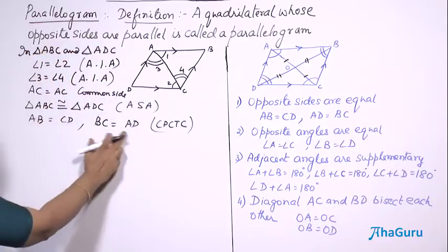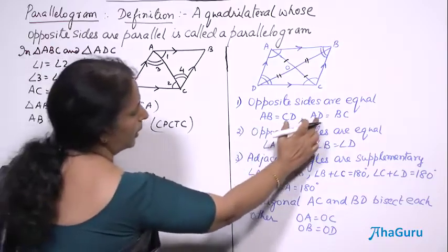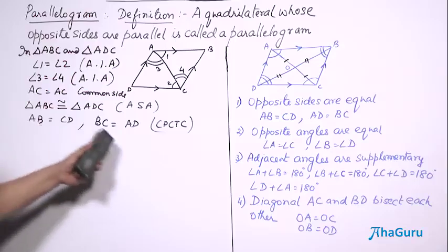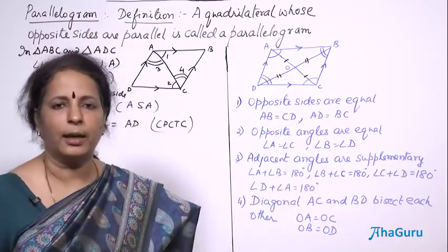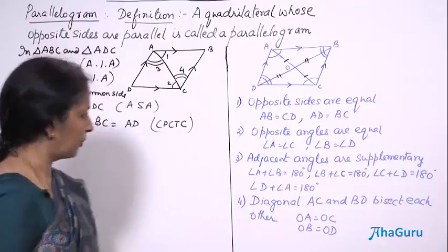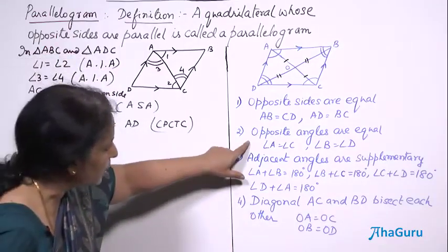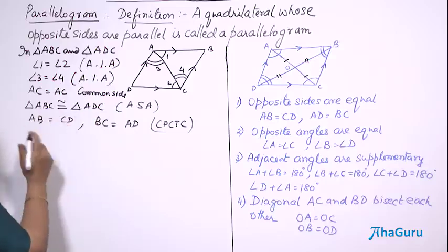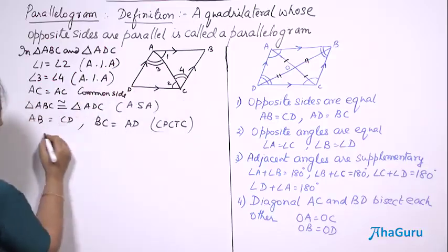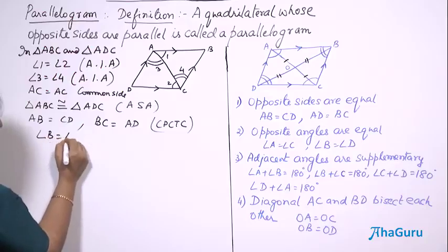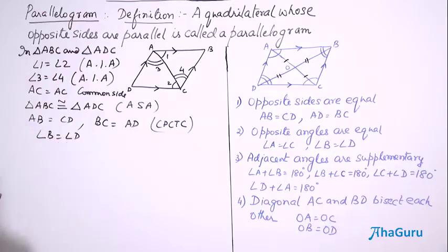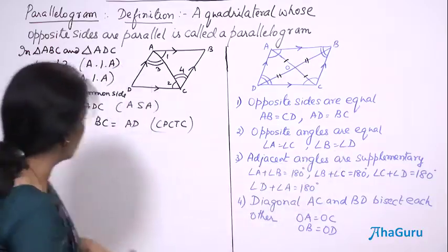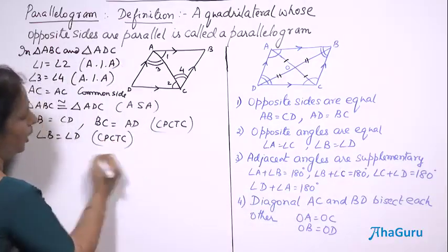So AB from the upper triangle equals CD from the lower triangle, and BC from the upper triangle equals AD from the lower triangle — these two are equal by CPCTC. I have proved AB is equal to CD and BC is equal to AD. So the first property — opposite sides are equal in a parallelogram — is now proved. Let us go to the next one: opposite angles.